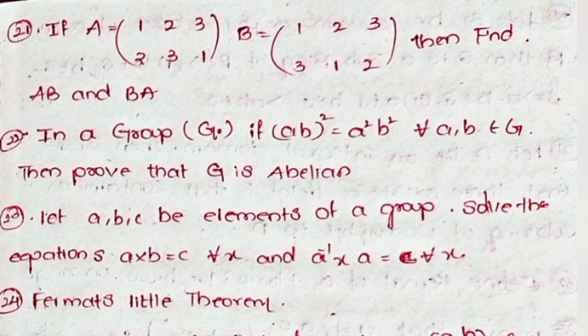Twenty-second, in a group (G, ·), if (ab)² = a²b² for all a, b belonging to G, then prove that G is abelian. Twenty-third, let a, b, c be elements of a group. Solve the equations: a·x = c for x, and a⁻¹·x·a = c for x.